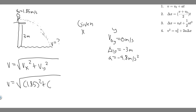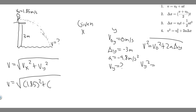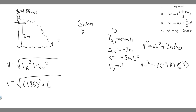Now that we have three kinematic variables in the y-direction, we can solve for the final velocity in y. The kinematic equation to use is: v² = v₀² + 2a·Δy. We solve for vy² directly, since we'll be plugging it in. So: vy² = 0² + 2(−9.8)(−3) = 2 × (−9.8) × (−3). The negatives cancel, giving vy² = 58.8 m²/s².